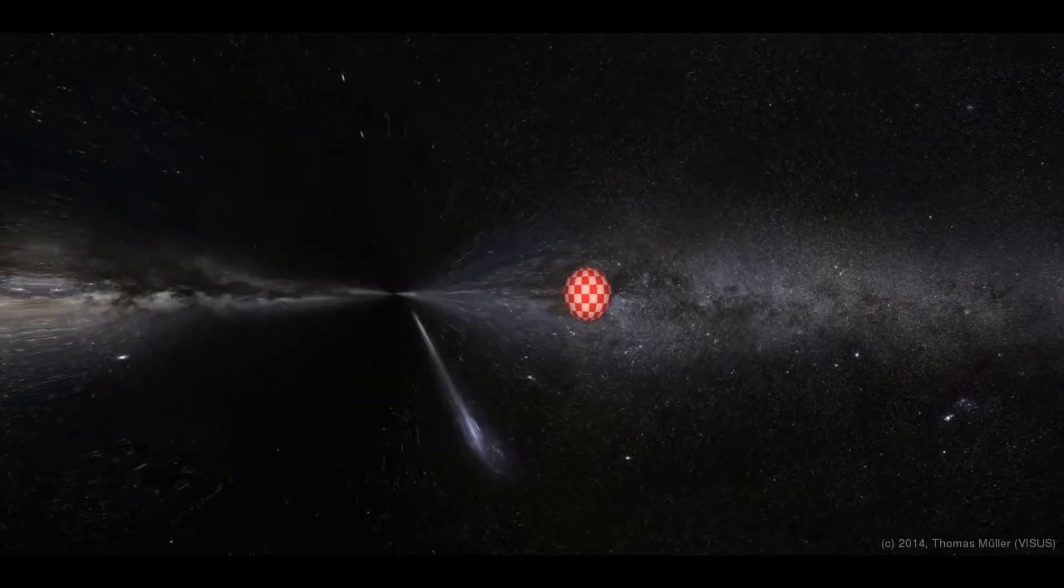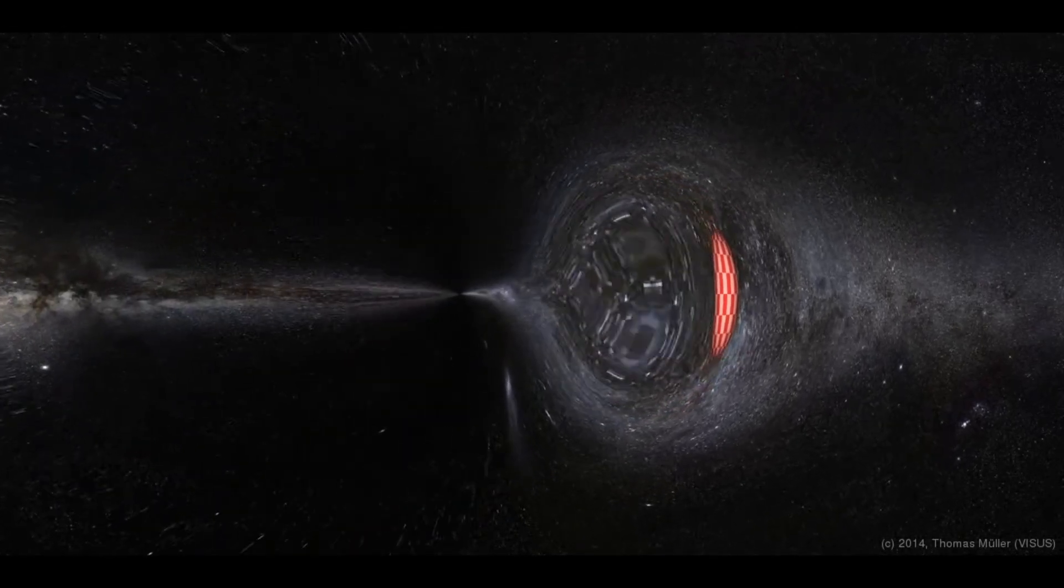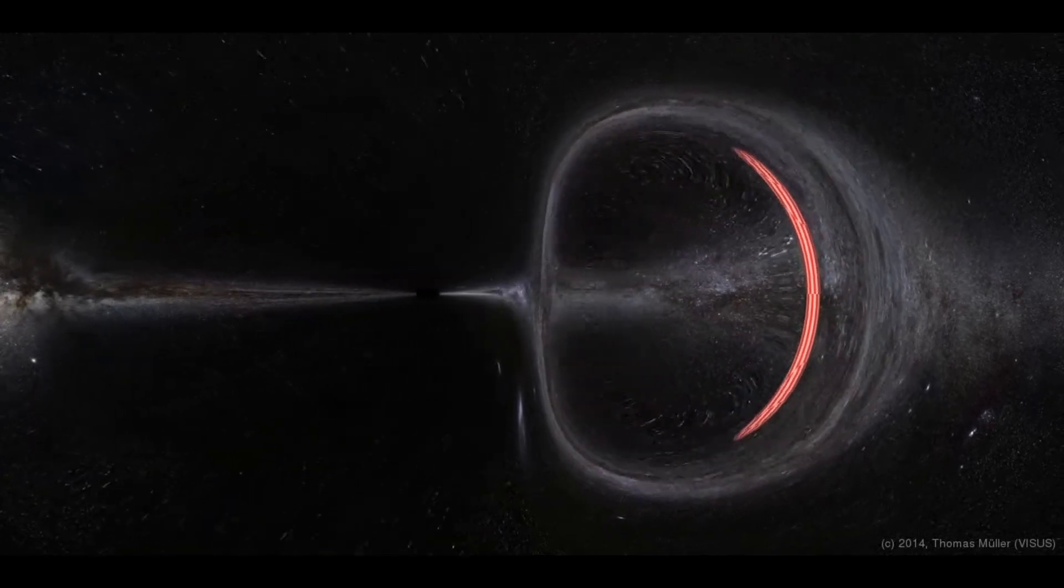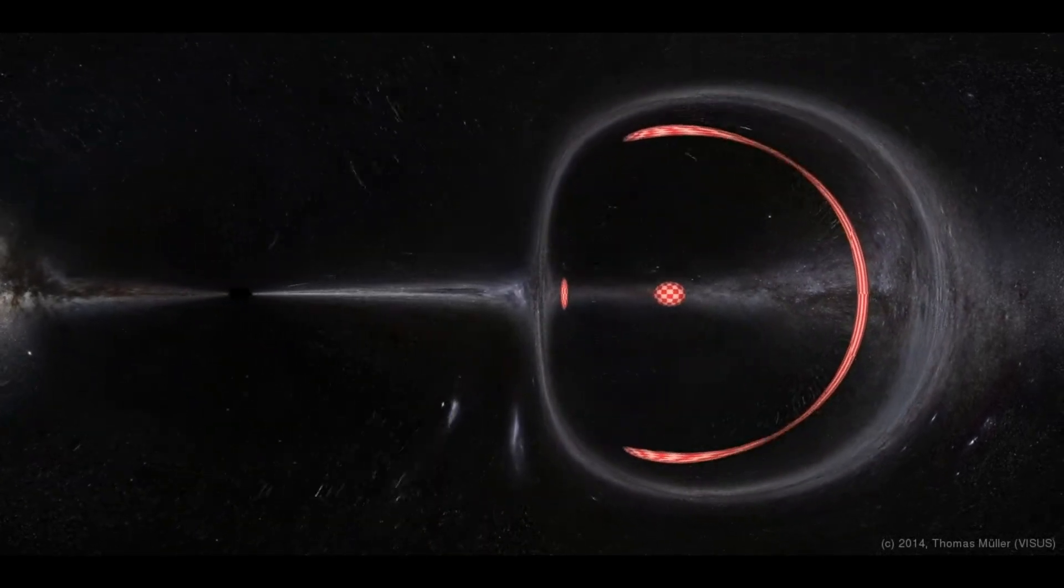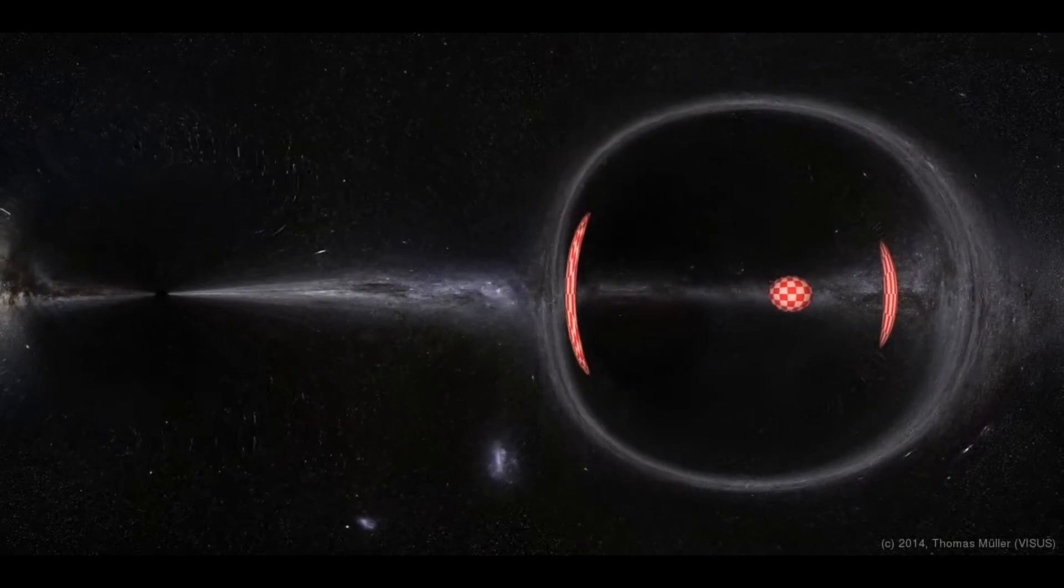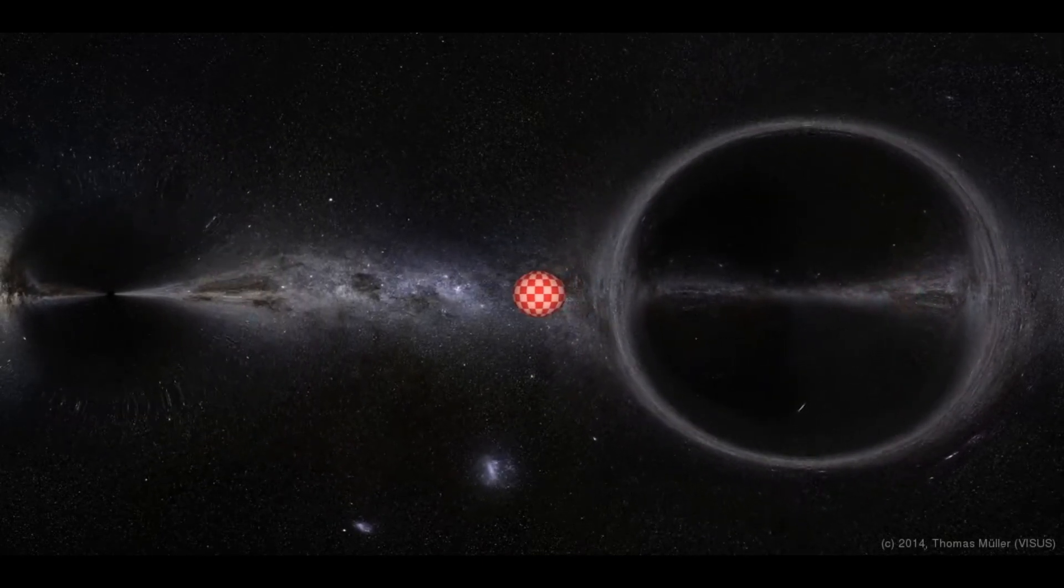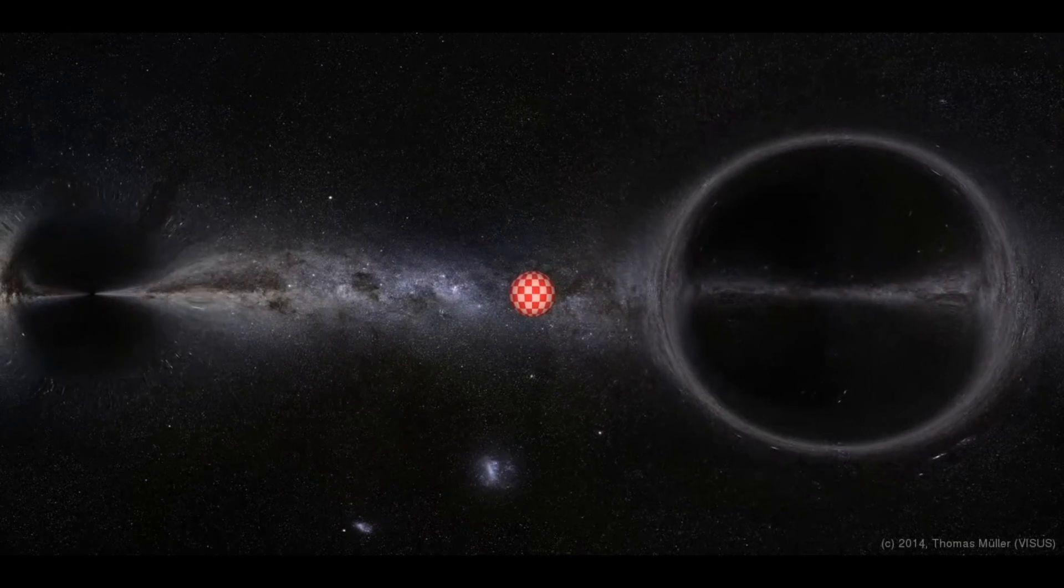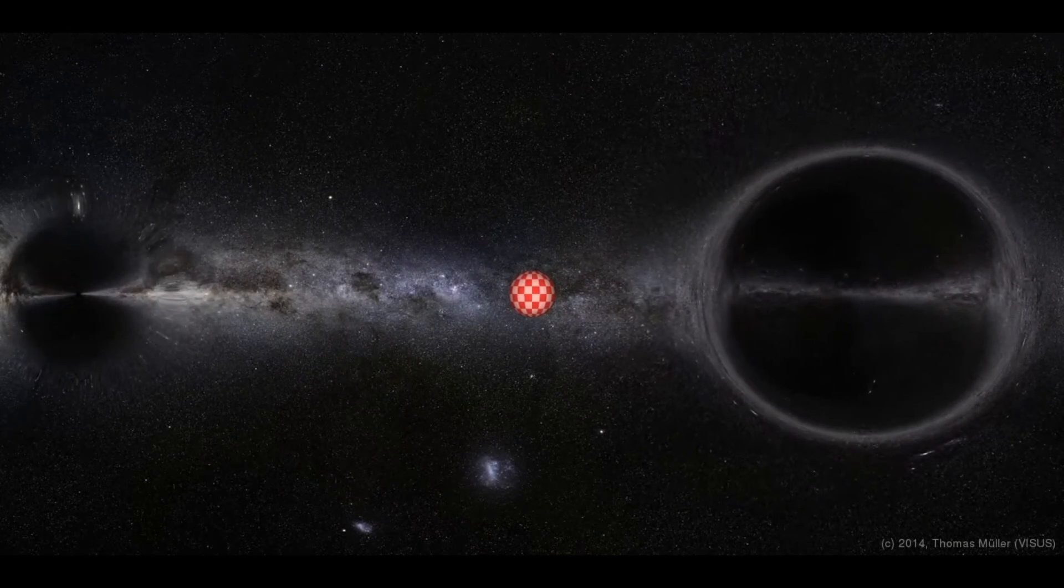And so it is argued that every singularity, with its infinite curvature, must be hidden beyond an event horizon created by this curvature. This implies that no light from the singularity will be able to reach a curious onlooker, seemingly confirming the cosmic censorship hypothesis.